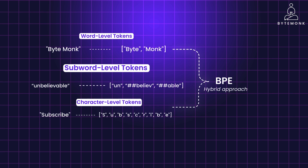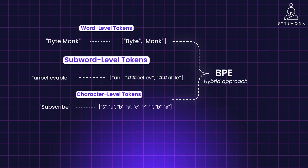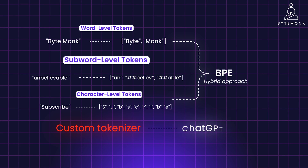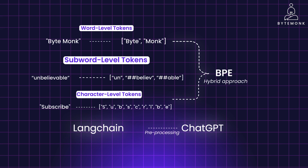Byte-pair encoding needs a separate video of its own, which will be made in the future. You can also build your own custom tokenizer. However, a custom tokenizer won't work with a commercial model like ChatGPT, as their tokenization process is tightly integrated with the model. You can still use your custom tokenizer as a pre-processing step before feeding text to the model, allowing you to tailor the input to your specific needs. One framework that makes this possible is LangChain — we'll dive deeper into that in another video.